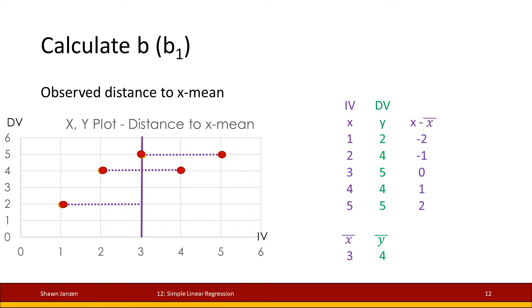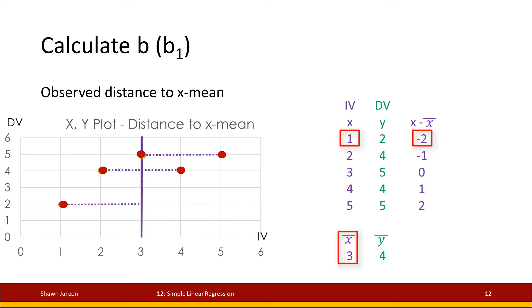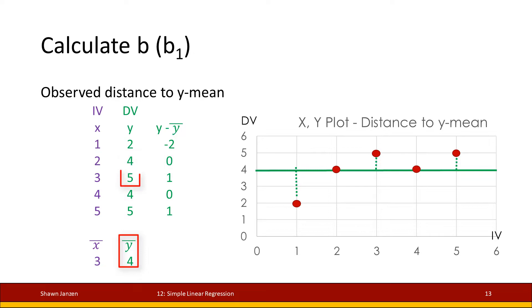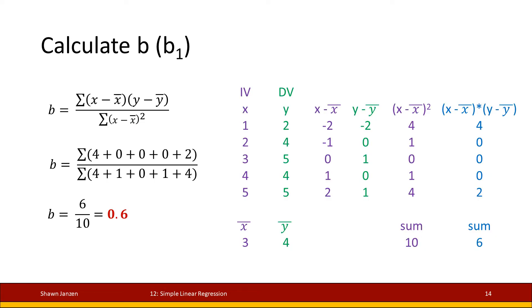For each observation, we compute x minus x-bar — the distance of each plotted point from the vertical mean of x line. The distance from 1 to 3 is negative 2, from 2 to 3 is negative 1, and so on. Then we compute y minus y-bar — how far each point's y value is from the mean of 4. The first y value of 2 minus the mean of 4 is negative 2; the second y value of 4 minus 4 is 0; the third value of 5 minus 4 is 1, and so on.